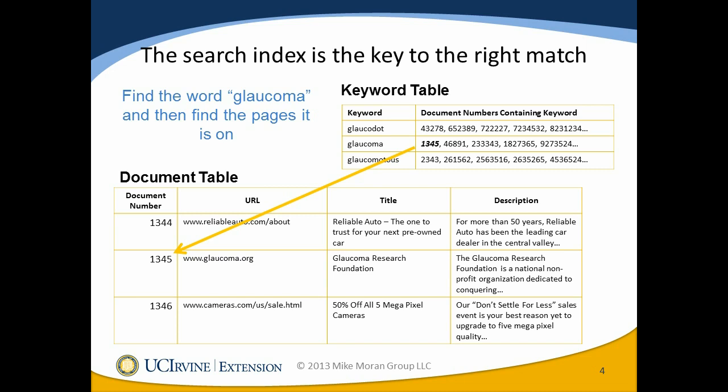When someone comes along to search for the word glaucoma, the first place it goes is that keyword table. It looks up the word glaucoma, and the first pass is to take every page that has the word glaucoma on it and use that as the set of search results. There's a lot more it does to rank things so that the best pages show up at the top. But a very simple thing you have to understand about content optimization is that you need to have the keyword on the page. If you have keywords you want to be found for, you need to make sure those keywords are on the pages you want to come up.